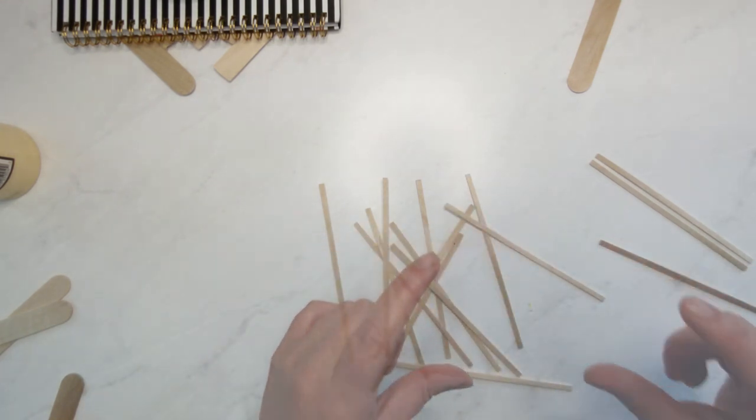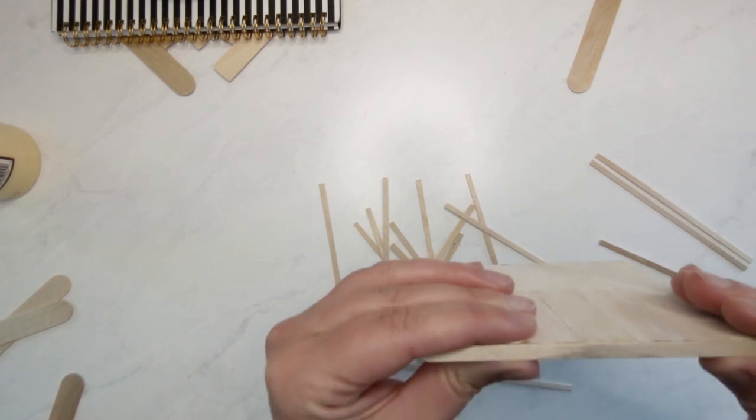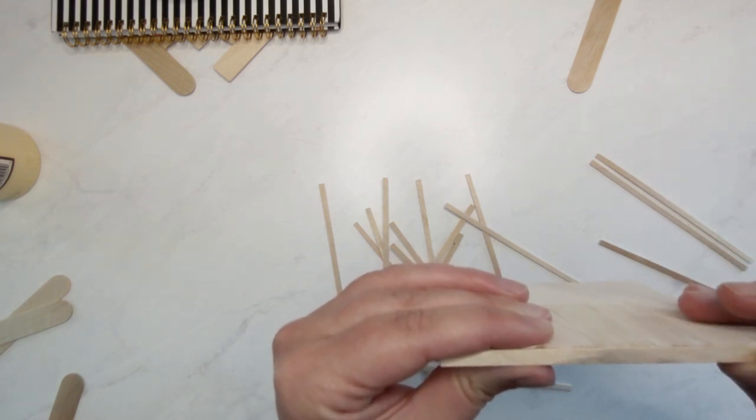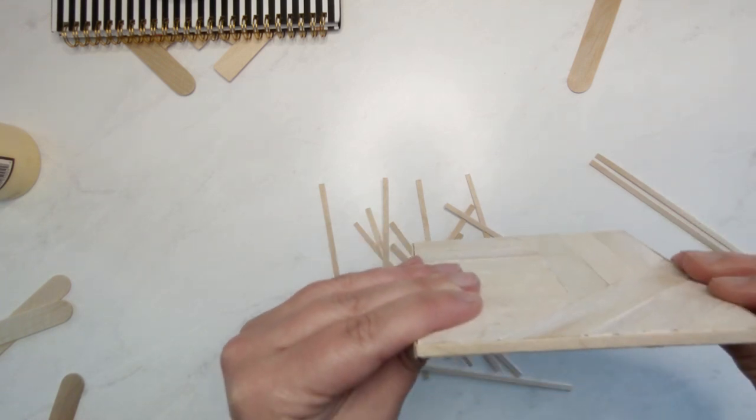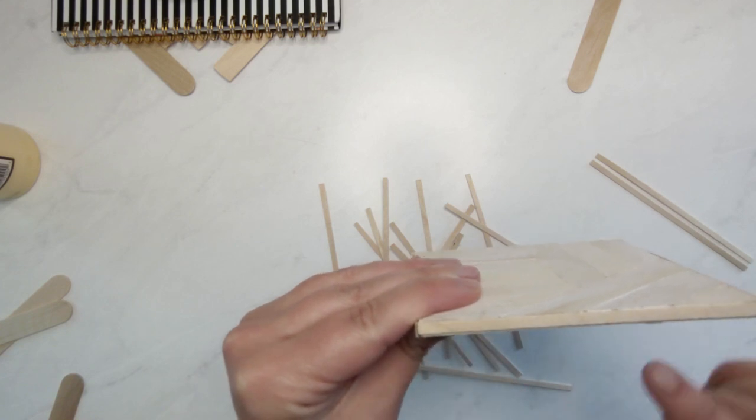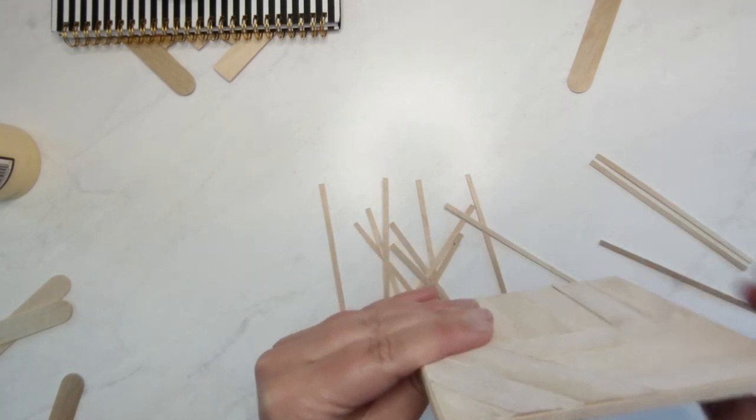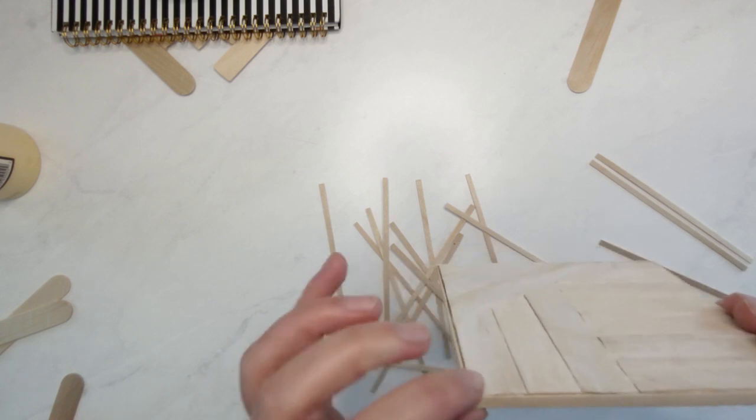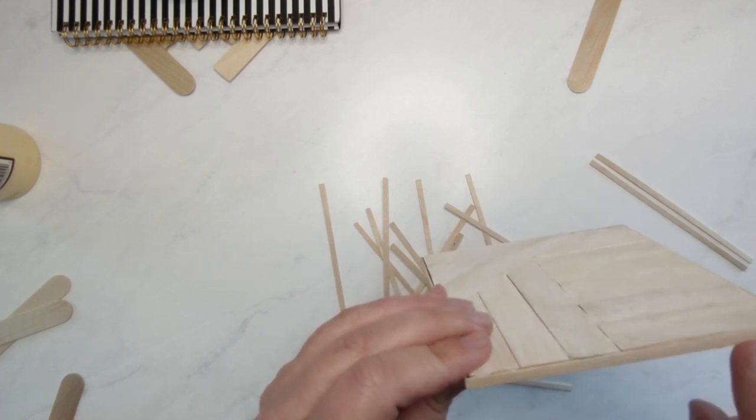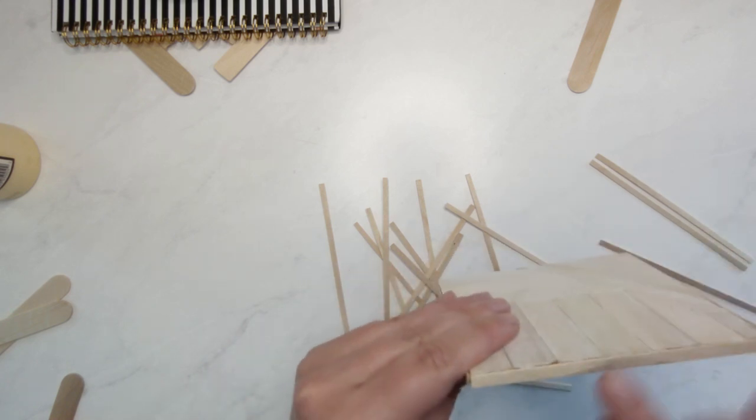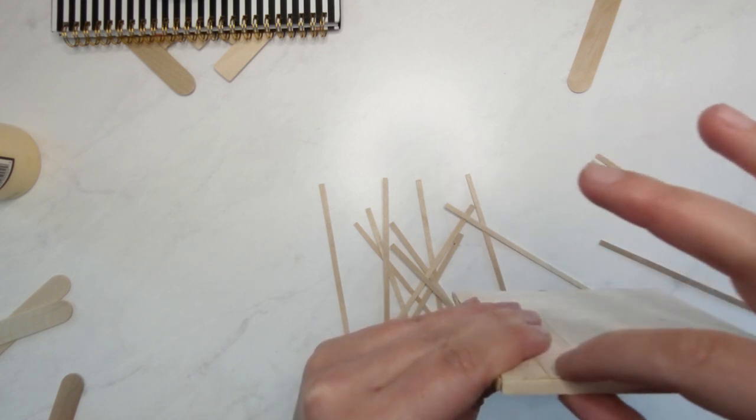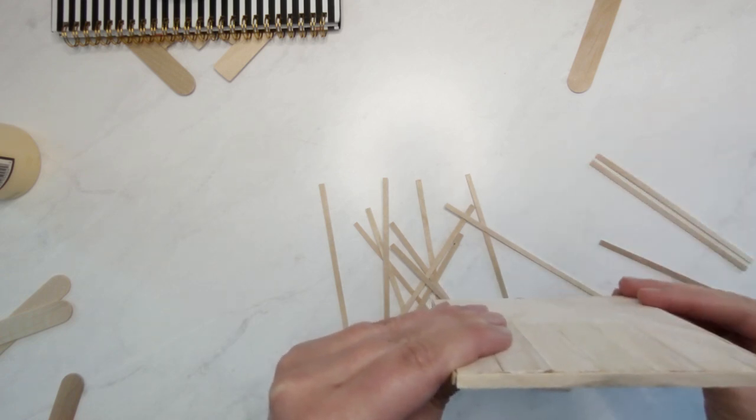What you really want to make sure you look for are sticks that are deep enough because they vary quite a bit. Some are going to be super skinny, some are going to be super deep. Here you can see this covers the entire edge whereas this one gaps a bit. So you're going to want to look for sticks that are going to cover the entire edge to give it a cleaner look.